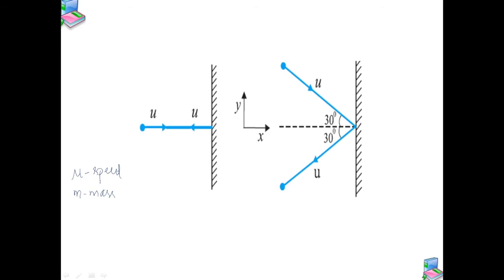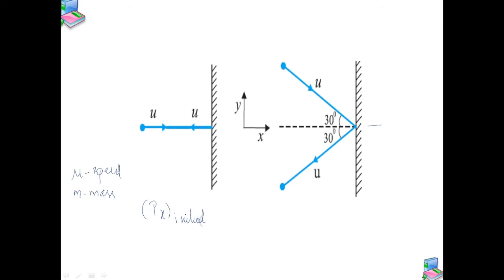Choose x and y axes as shown in the figure. Consider the change in momentum of the ball in each case. For Case A: the initial momentum in the x-direction, px initial, equals m times the initial velocity. Since the ball hits perpendicularly, the initial x-velocity is u and after reflection it becomes −u, so px initial = mu and px final = −mu.